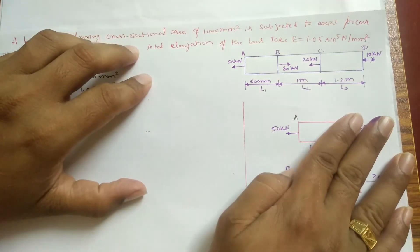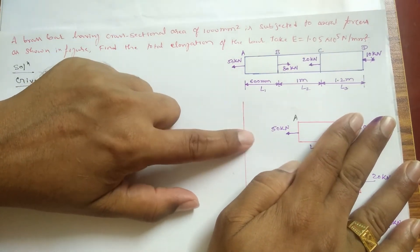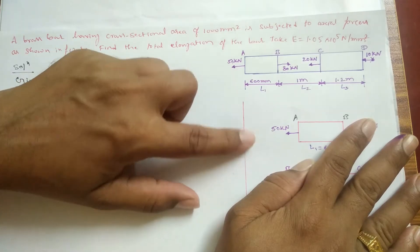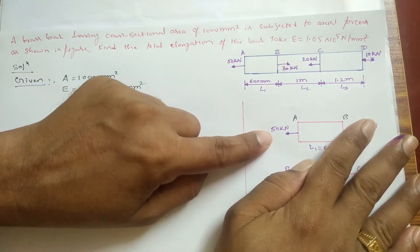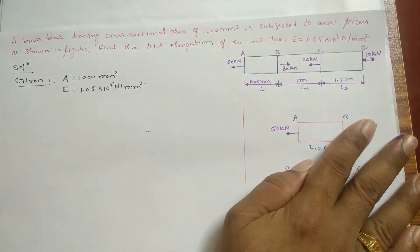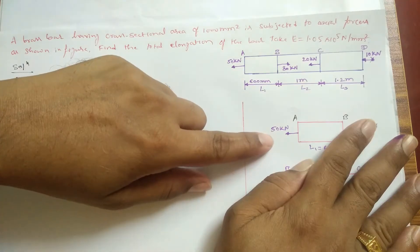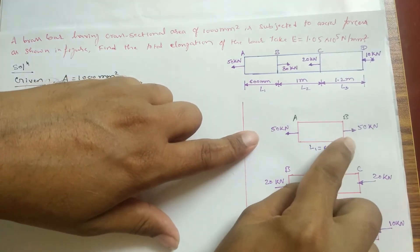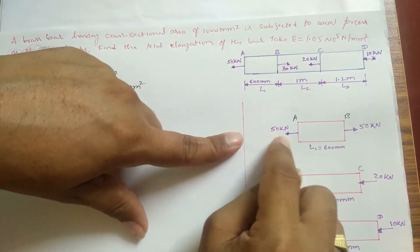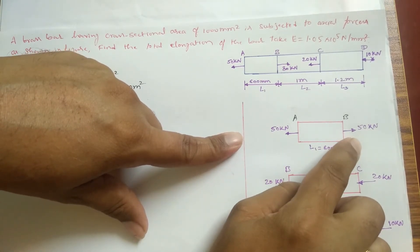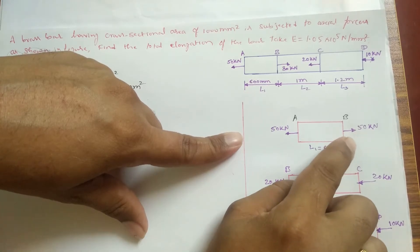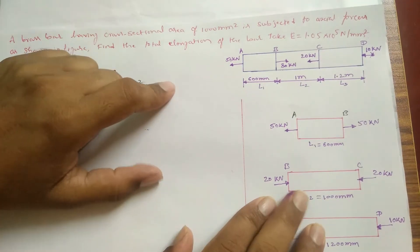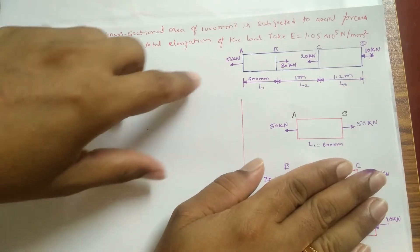For block AB, the load given is 50 kN. To satisfy the equilibrium condition, the value must be the same magnitude but in the opposite direction. So I have written 50 kN in the left direction, and to satisfy equilibrium, 50 kN is added in the opposite direction.